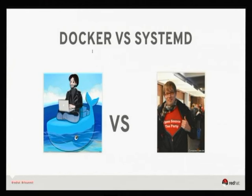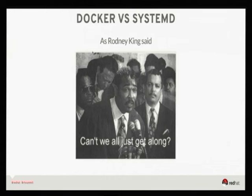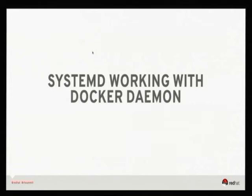The problem is we have two guys ahead of two teams: Solomon Hykes, who's in charge of Docker and basically the guy that created it, and Leonard Poettering. Neither one of them is willing to compromise much, so I get stuck in the middle. It's been an interesting experience. Like Rodney King said, 'Can't we all just get along?' — that's really what I'm after.